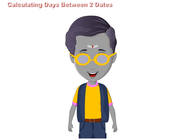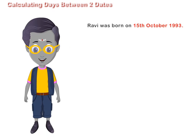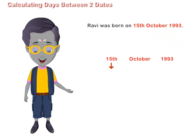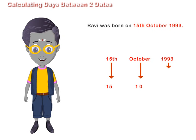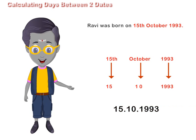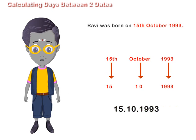Let us learn how to write date of birth in short form. Suppose Ravi was born on 15th October 1993. His date of birth in short form is 15-10-1993, where 15 is the day, 10 is the month of October, and 1993 is the year.